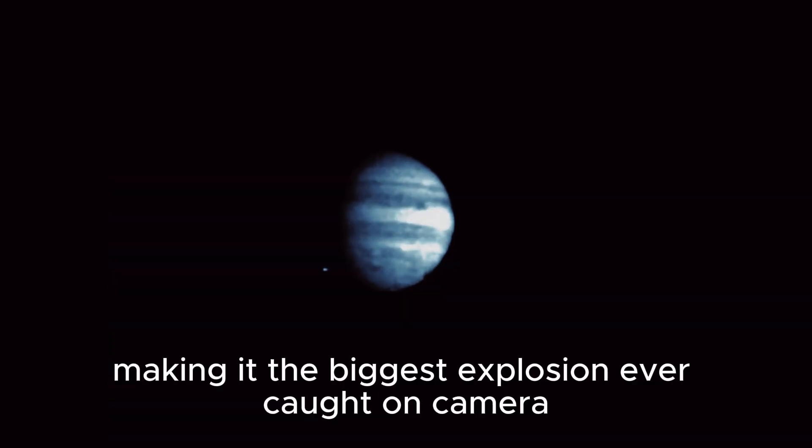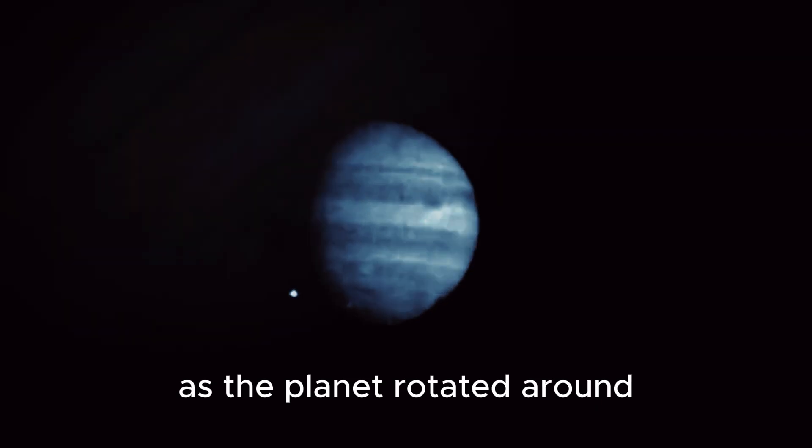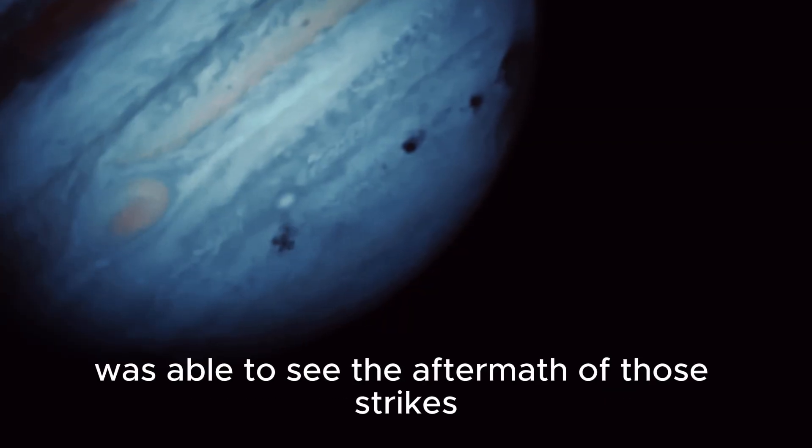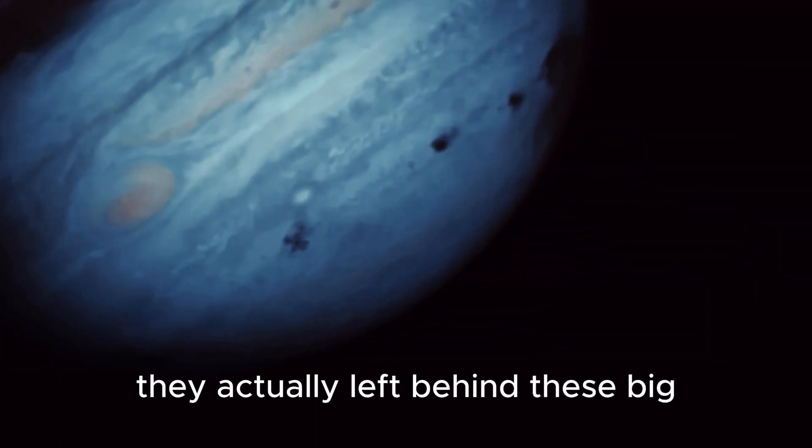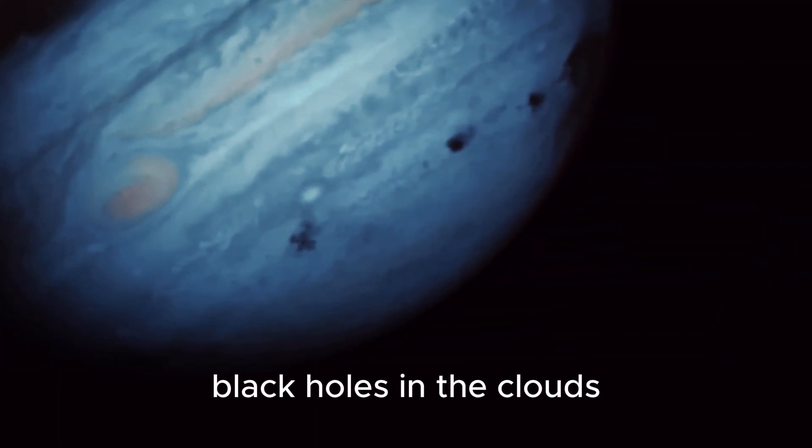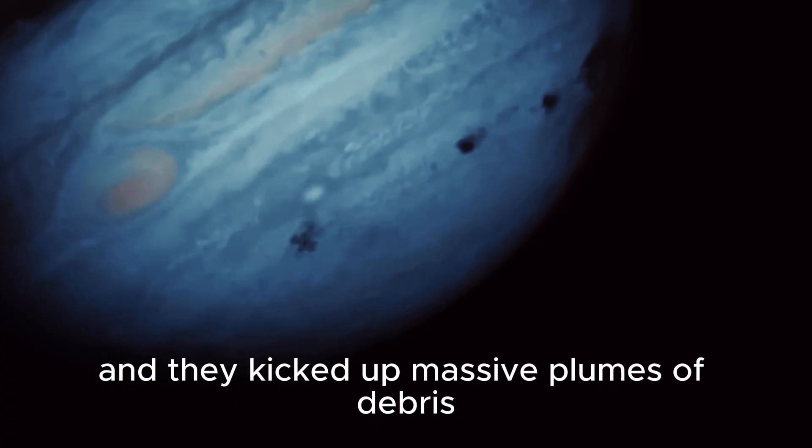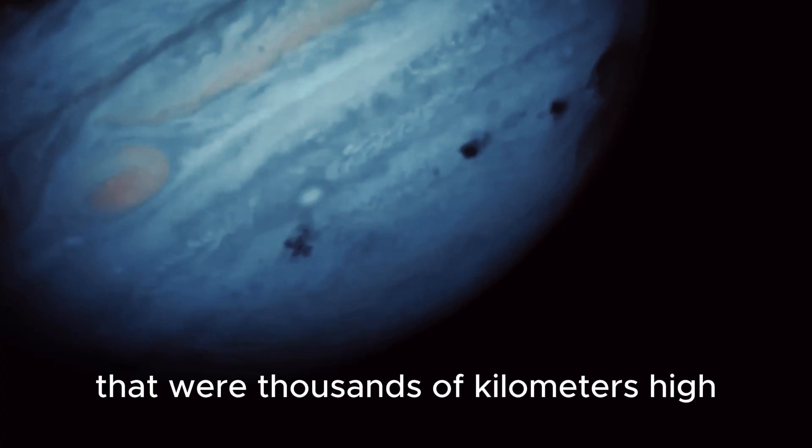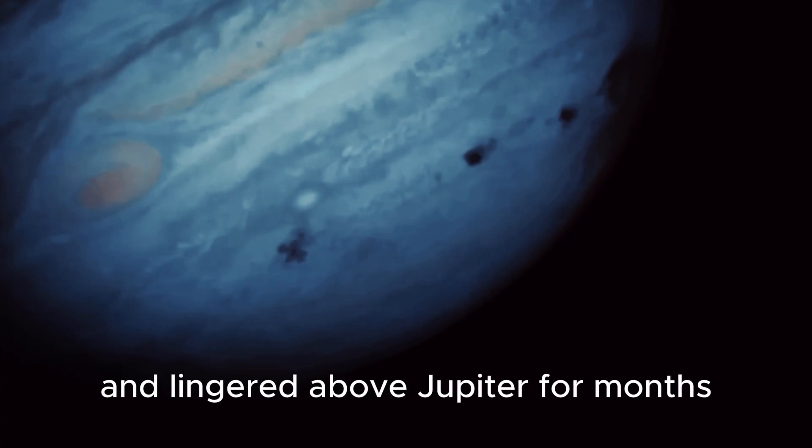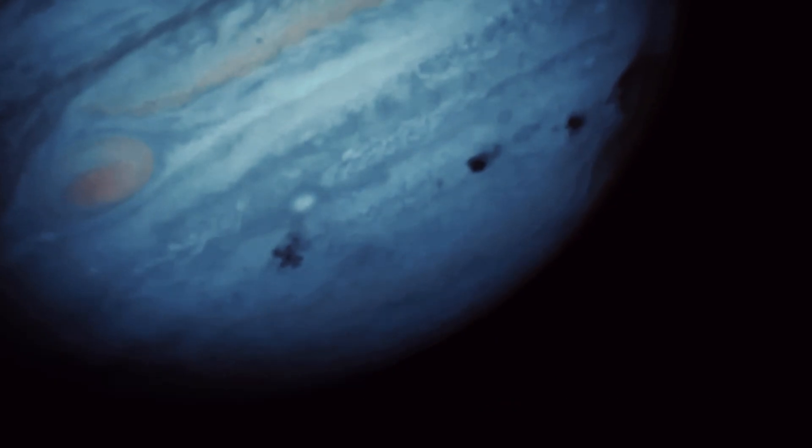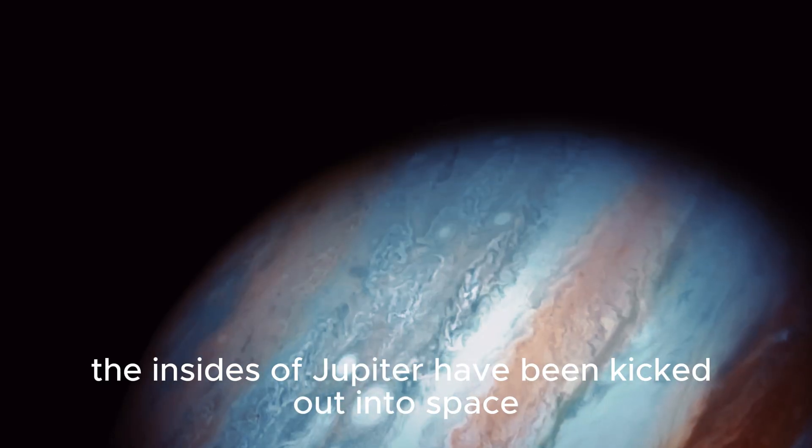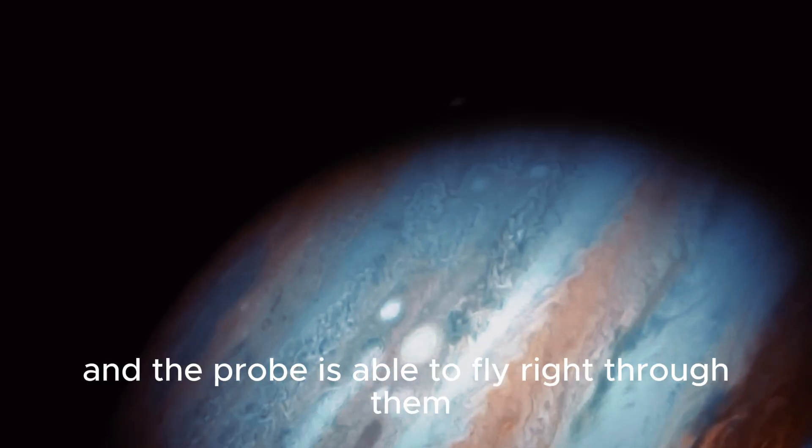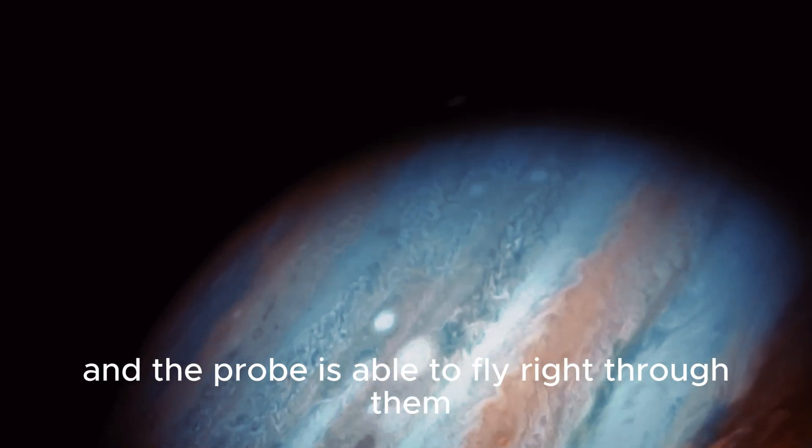As the planet rotated around, the Hubble telescope was able to see the aftermath of those strikes. They actually left behind these big black holes in the clouds, and they kicked up massive plumes of debris that were thousands of kilometers high, and lingered above Jupiter for months. And this is what the Galileo spacecraft arrives at. The insides of Jupiter have been kicked out into space, and the probe is able to fly right through them.